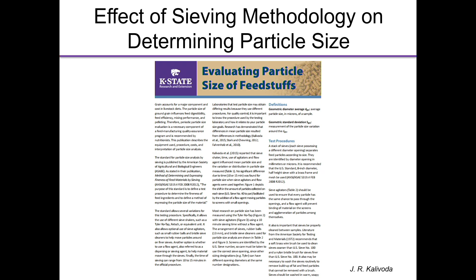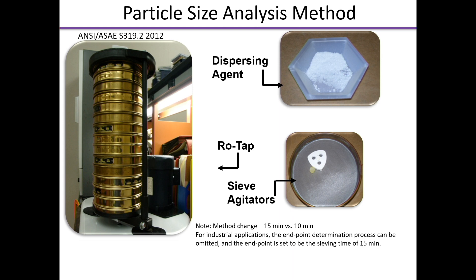What's important is how you do the particle size analysis. I've spent a good chunk of my career trying to convince the industry how to do this correctly. We published a bulletin available at the K-State website. Two things are critical: first, using a dispersing agent; and second, using sieve agitators. If you're not using both, I can almost guarantee you're getting a higher particle size value than you expect — which in the swine industry costs money in feed conversion, and in the broiler industry could affect gizzard development. You may think you're grinding at 800 microns when the reality is you're somewhere around 600 microns.